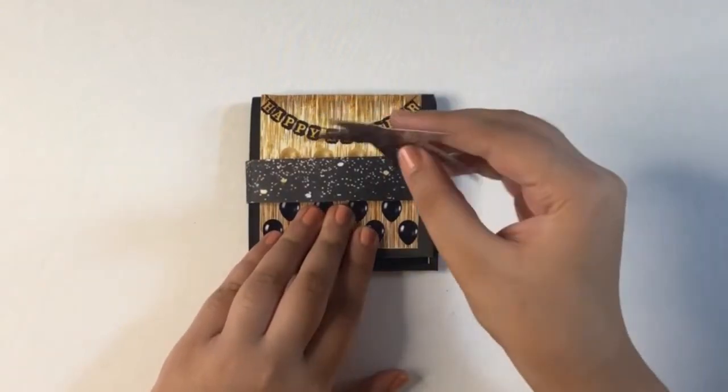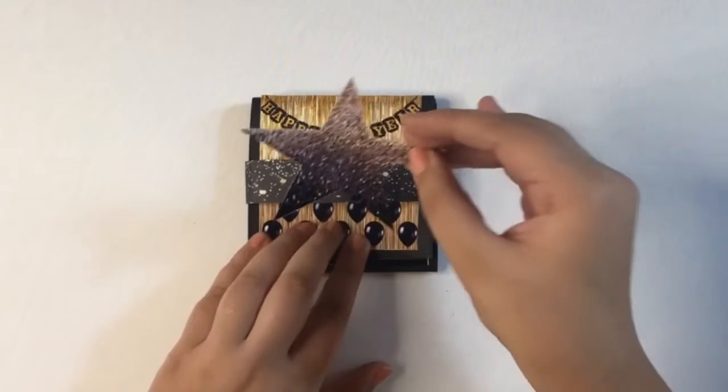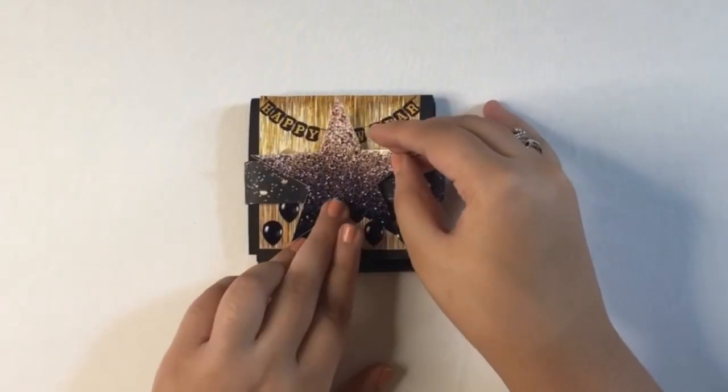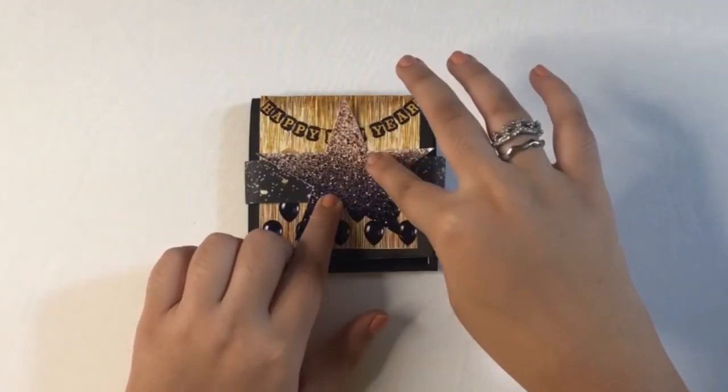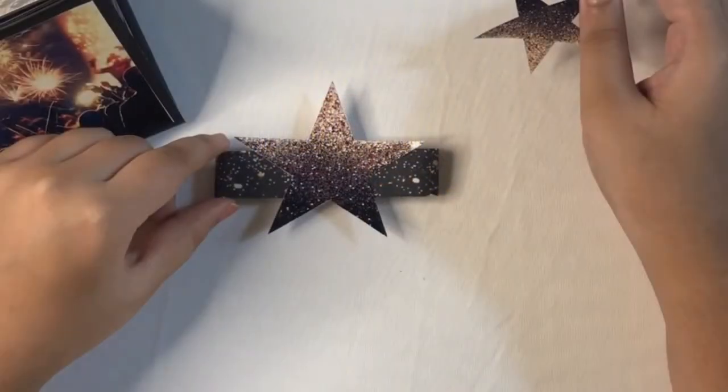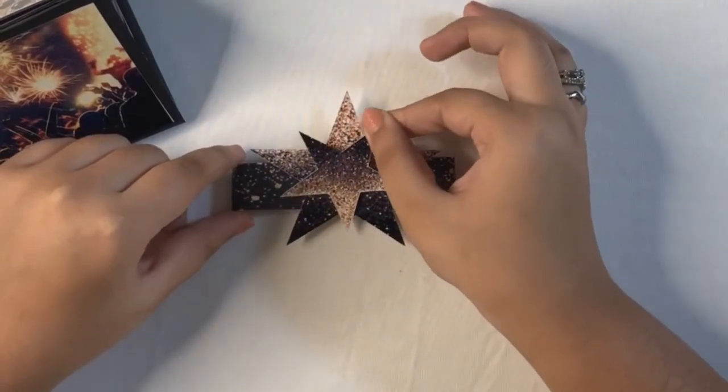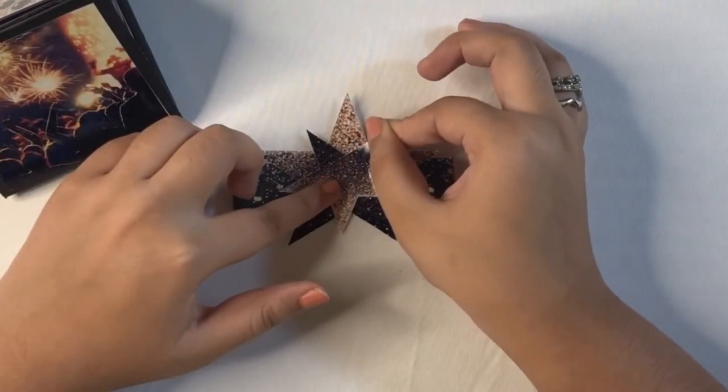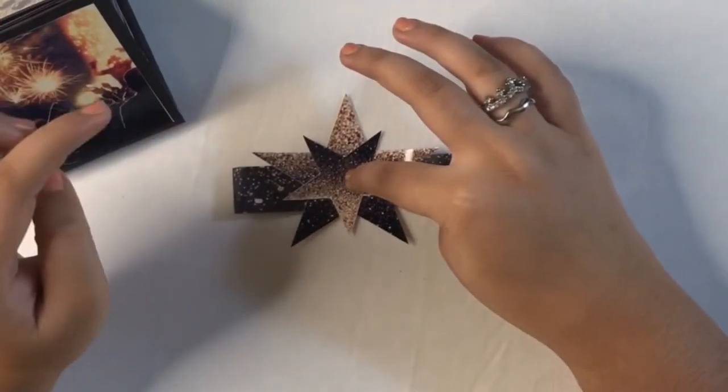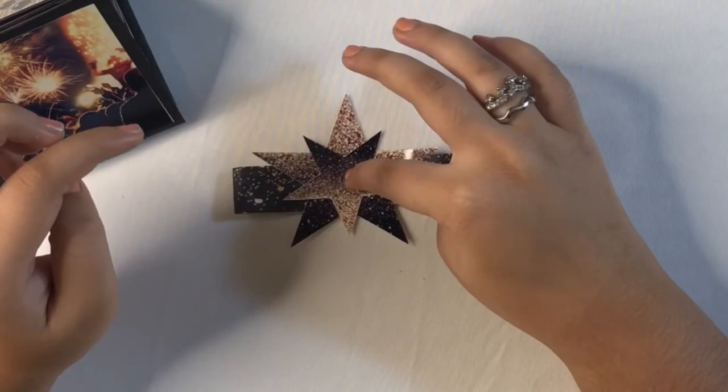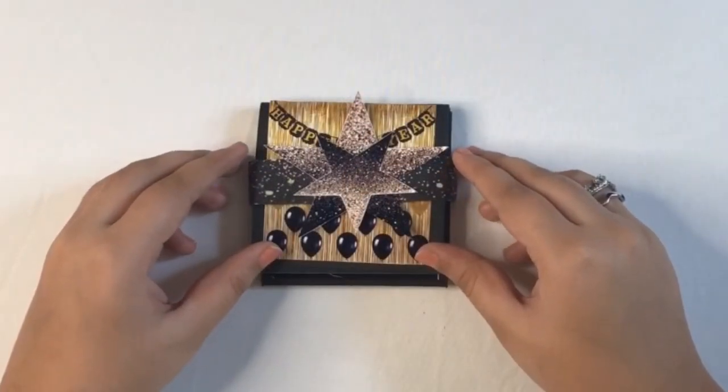I have got this star. You can take any shape, or you can just leave it plain. I will stick this star in the middle. I have got a smaller star which also I will stick in the middle. So our amazing new year card is ready!